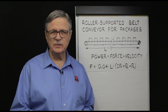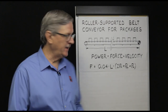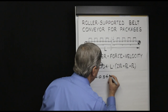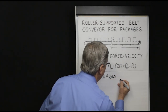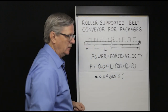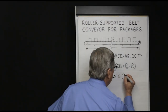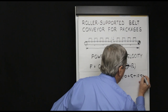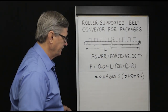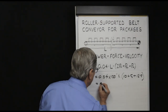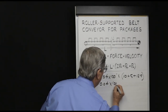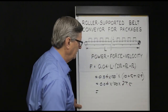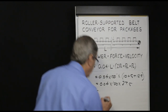Summing those three numbers, we can calculate required belt pull. Using a roller bearing friction of 0.04, a conveyor length of 100 feet, and a total weight on the rollers equal to 10 pounds per foot of belt, 5 pounds per foot of rolling stock, and 12.5 pounds per foot of product: 0.04 times 100 times 27.5 yields a required belt pull of 110 pounds.